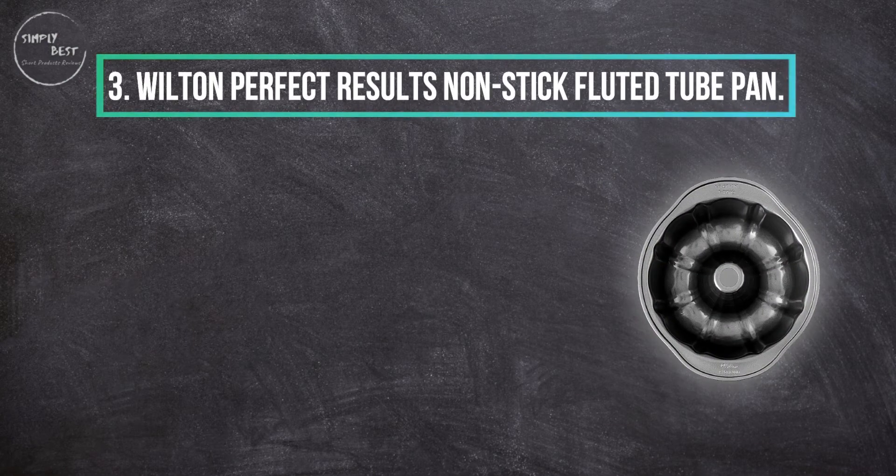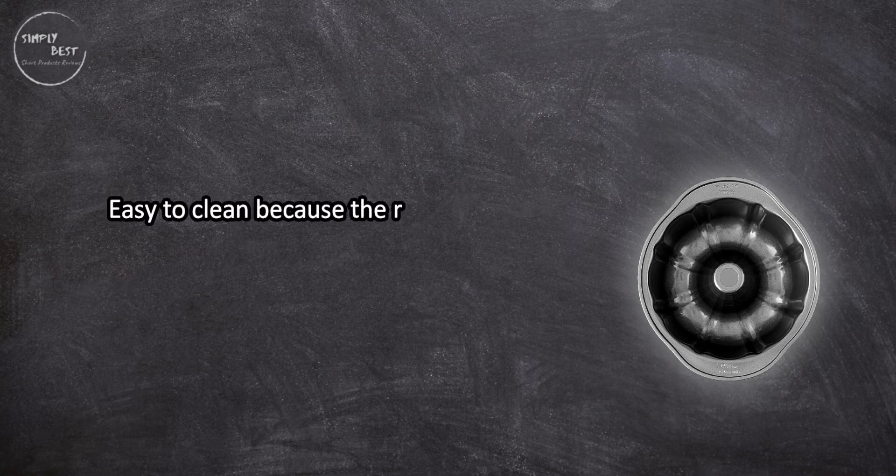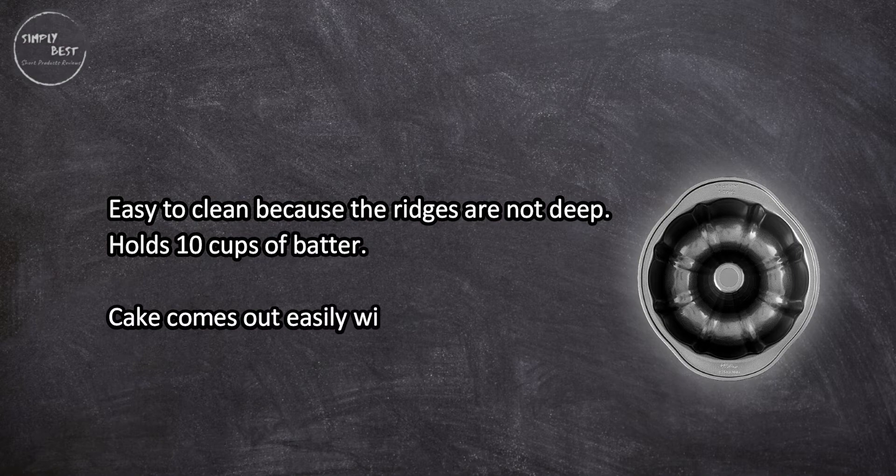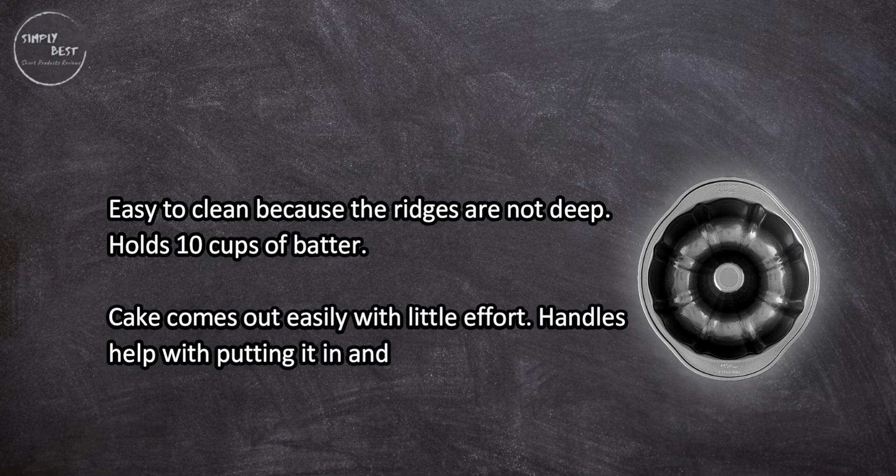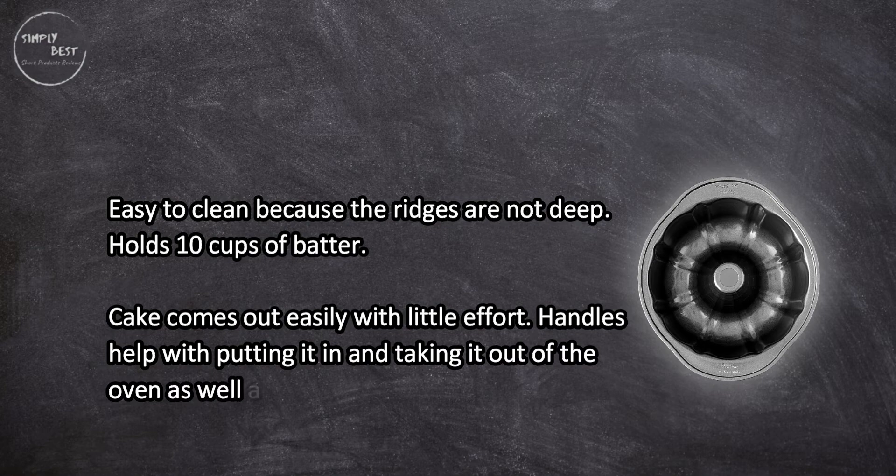At number three, Wilton Perfect Results Nonstick Fluted Tube Pan. Easy to clean because the ridges are not deep, holds 10 cups of batter. Cake comes out easily with little effort. Handles help with putting it in and taking it out of the oven as well as removing the cake.